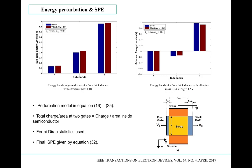Two bar charts show the effectiveness of the perturbation model — perturbation equations 16 to 25 in the paper. The blue bars are from our proposed model; the red bars are from the numerical simulator TCAT. The left chart shows the ground state at flat-band condition; the right shows results with a gate voltage of 1.5 V above flat-band voltage. The bars agree well with TCAT, proving the effectiveness of our perturbation model.